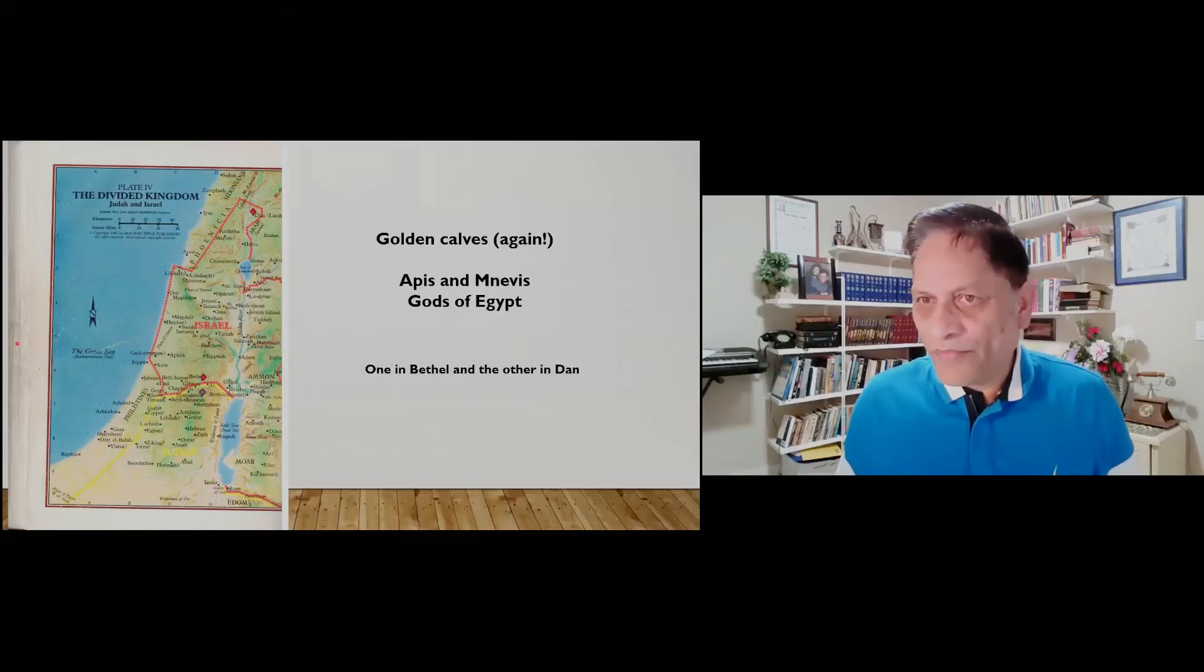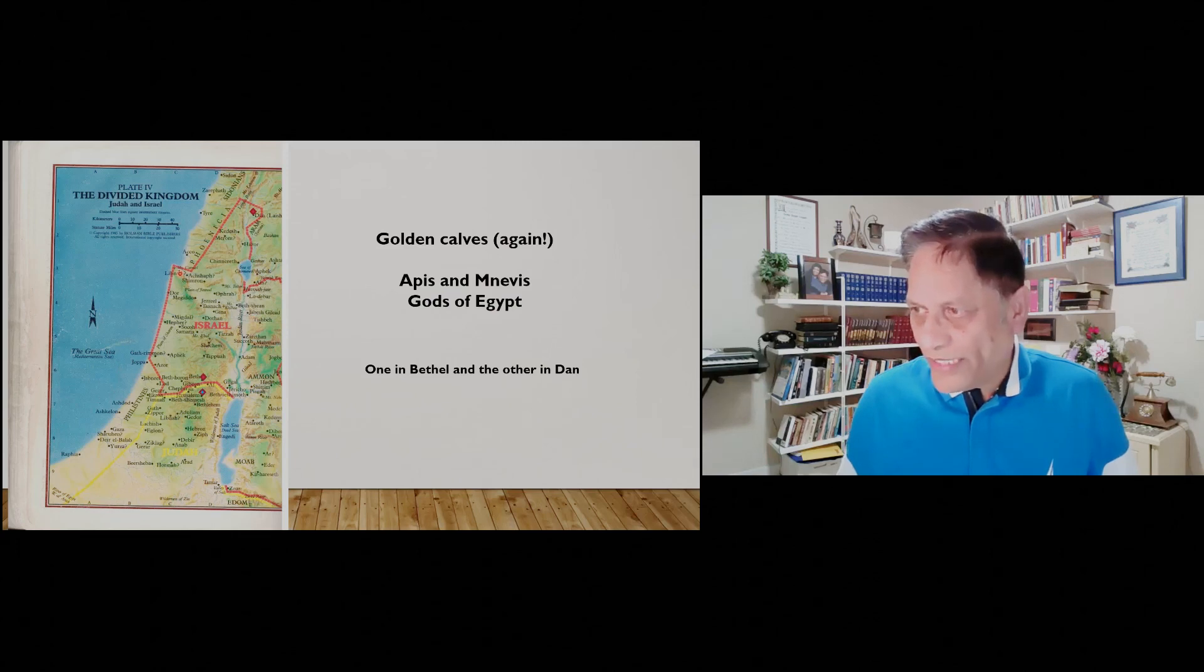I have created some slides to share with you. If you see here, this is the land of Israel. What you see in the red border is the northern part of the kingdom of Israel, and what you see in the yellow border is the southern part, known as Judah.